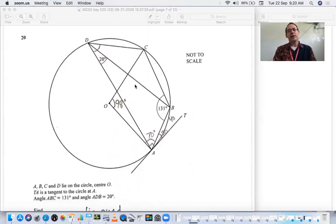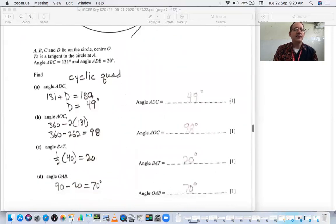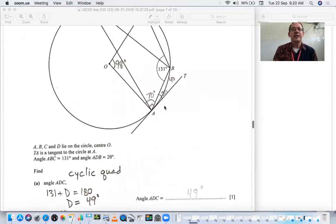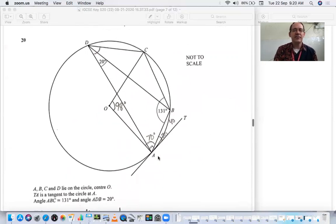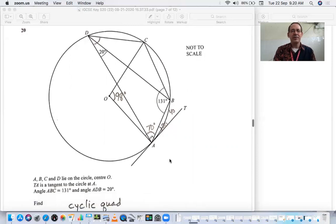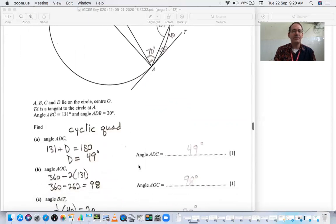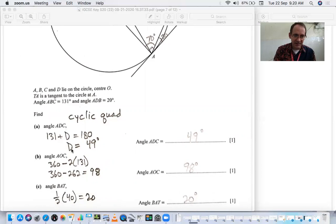Number 20, we look at this and we need to answer these questions. Angle ADC. When we look at angle ADC, it's this one up here. At first, it looks complicated until you realize that ABCD makes a cyclical quadrilateral. It means you have four points that are on the edge of the circle. Your opposite angles have to add up to 180. So this 131 and this ADC have to add up to 180. So your ADC is 49.